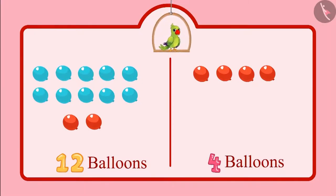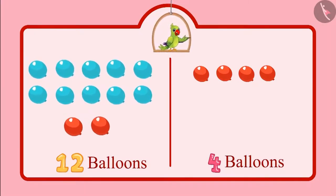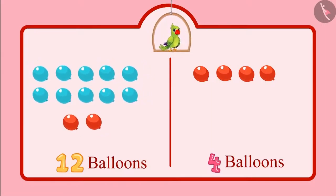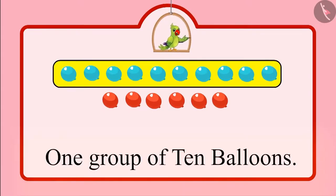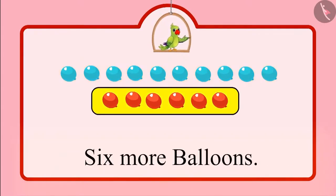Let us see. First of all, Neha blew 12 balloons and Chotu blew four balloons. So children, if we see all balloons together, then we have one group of 10 balloons and six more balloons. That means we have a total of 16 balloons.